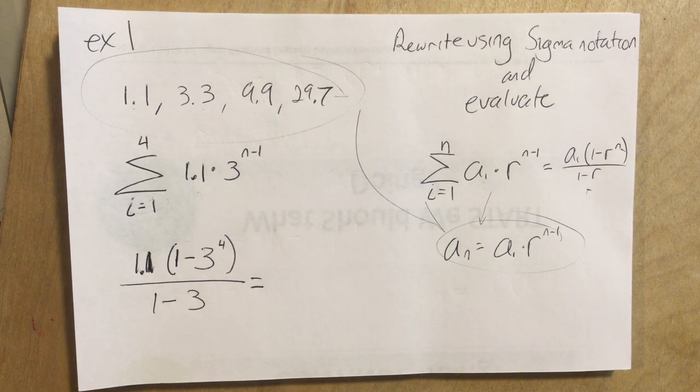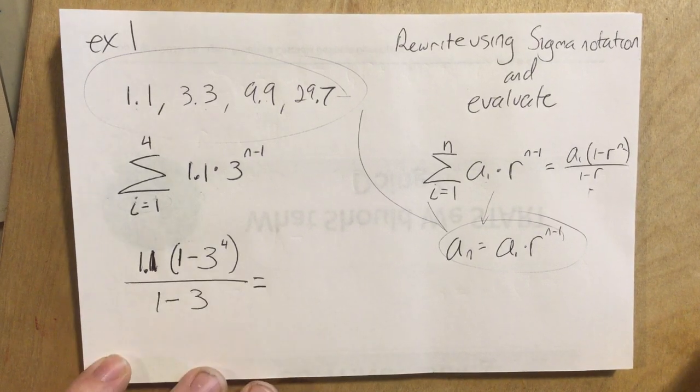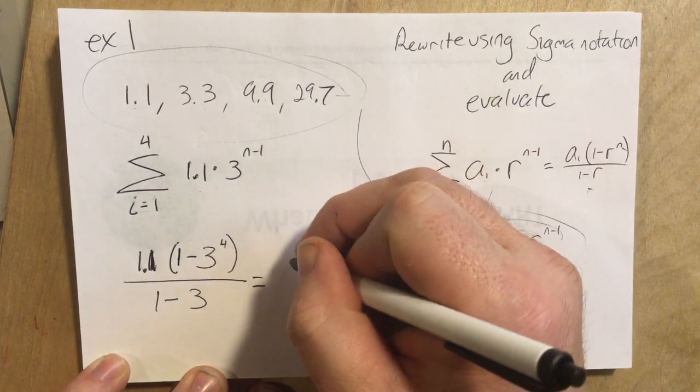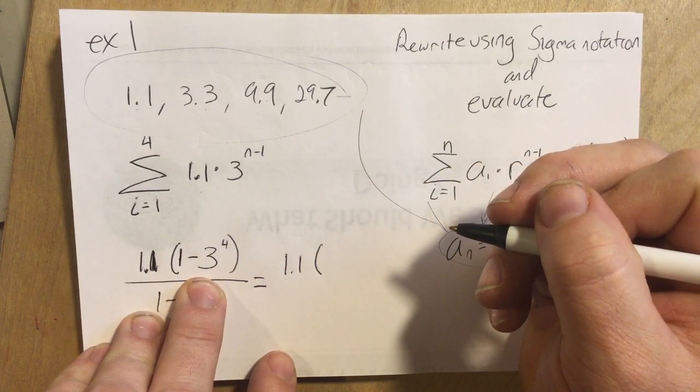Kind of a funny thing. To me, it is a bit counterintuitive, but it absolutely works for an r that is negative. Okay, so let's just clean this up. 1.1 times, okay, what's 3 to the 4th power?